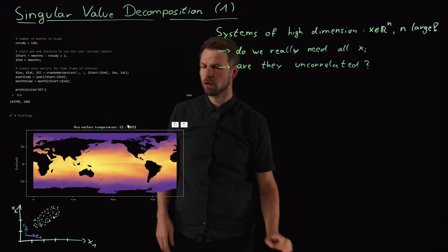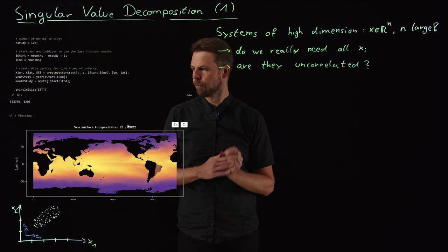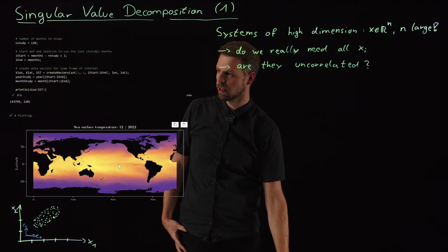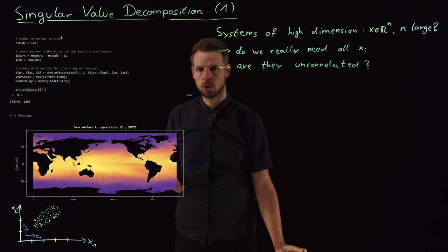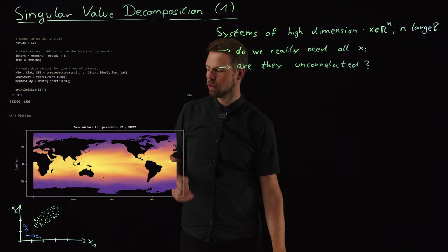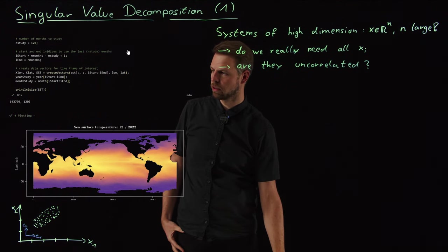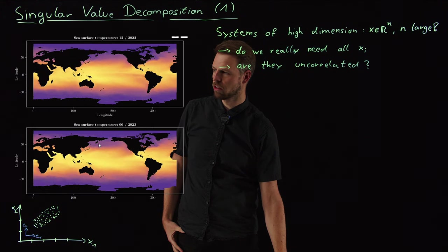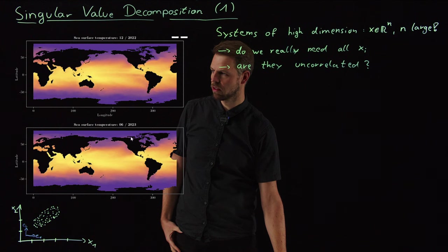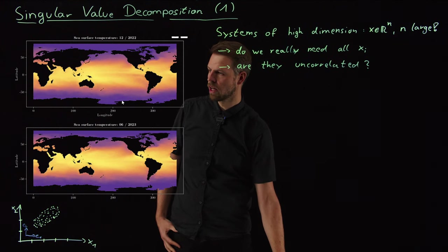So I want to study for 10 years the sea surface temperature distribution. And here's what it looks like, for instance, in December 22. And you see light colors refer to warmer temperatures and more purplish colors to colder ones. So we see what can be expected.